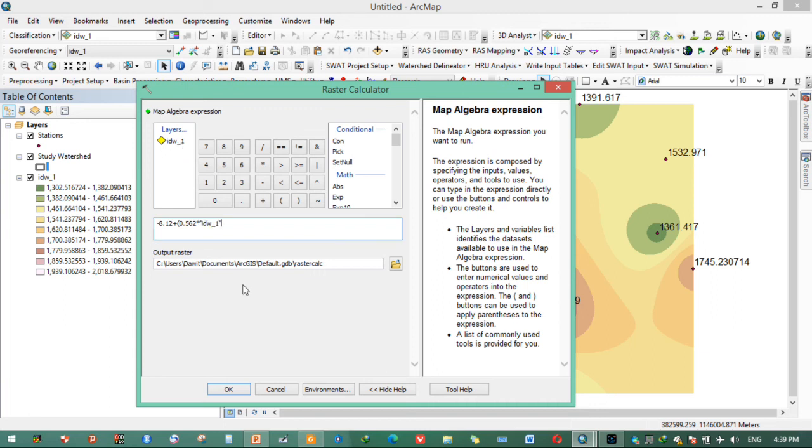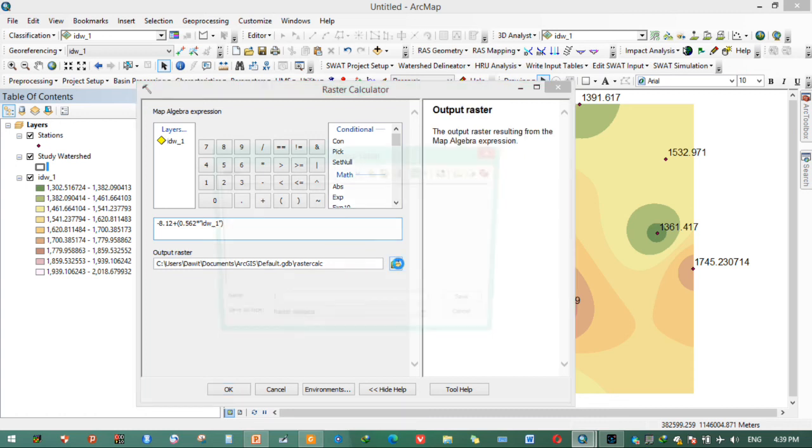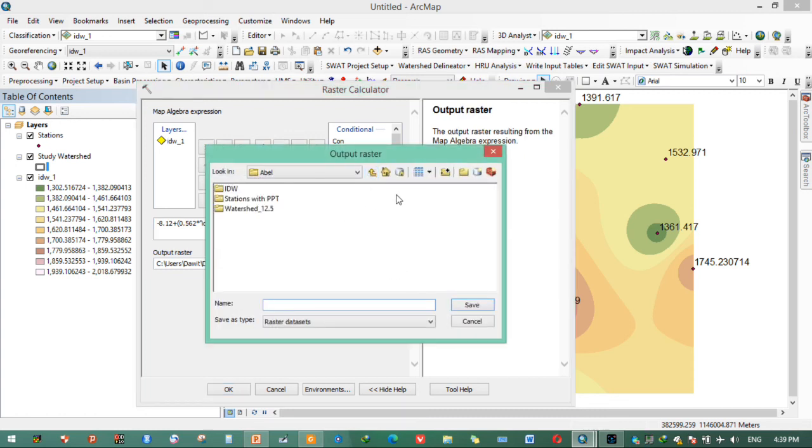We need to equate this equation. Minus 8.12 plus, where P is, P is this IDW. Delete this one. Double click, close the bracket.